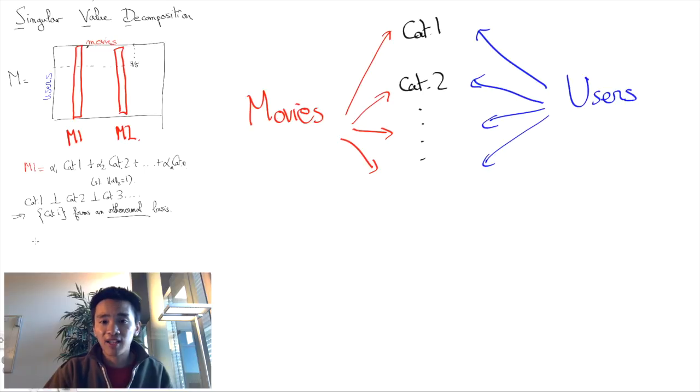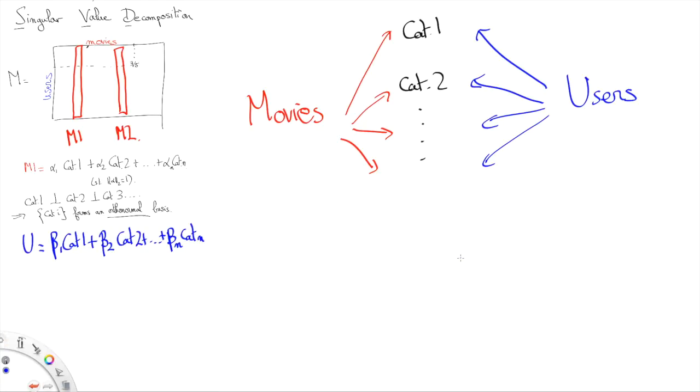In fact, each user category will be represented by the same unit vector that is used to describe the corresponding movie category, and each user will be a linear combination of user categories.